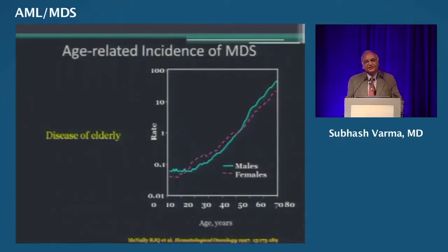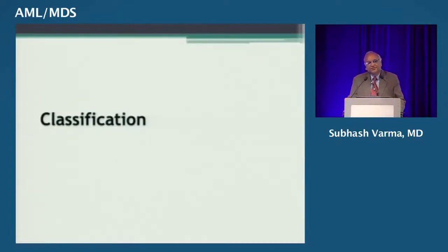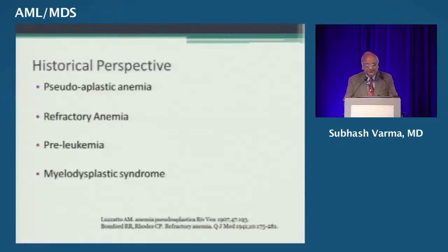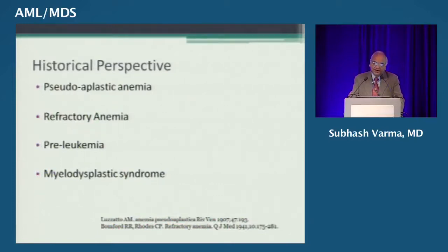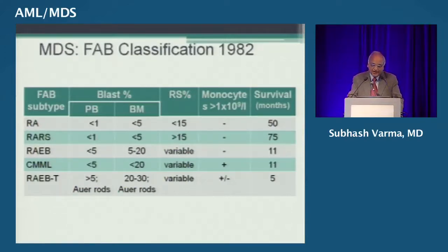The incidence of myelodysplasia increases with age, and with increasing age, managing cytopenias is somewhat difficult. Myelodysplasias were historically called by several names, including refractory anemia, and because of their propensity to go on to leukemia, pre-leukemia. Finally, the name myelodysplastic syndrome was given by the FAB group, and the first classification appeared in 1982. In the earlier classification there was a mention of MDS, but they were not classified as they were in 1982.